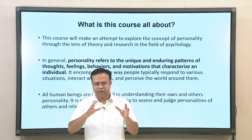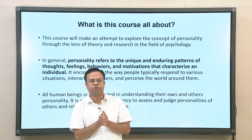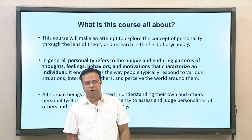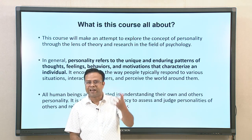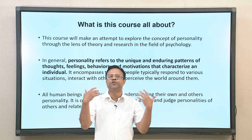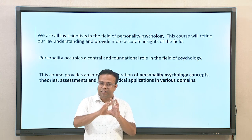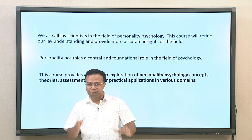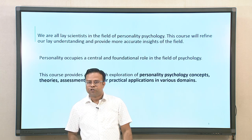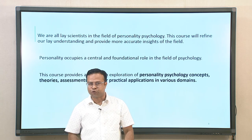We constantly make judgements about other people and ourselves, labelling them with certain characteristics. For example, we say somebody is introverted or extroverted, or that someone has a nervous type of personality, or somebody has high conscientiousness. These are all descriptions of personality traits. In that sense, we are all lay scientists in personality psychology, assessing personality and making judgements all the time — but obviously from a layman's perspective. This course will refine that lay understanding and provide more accurate insights into the field.